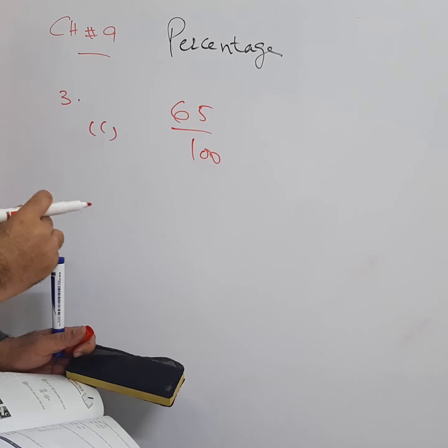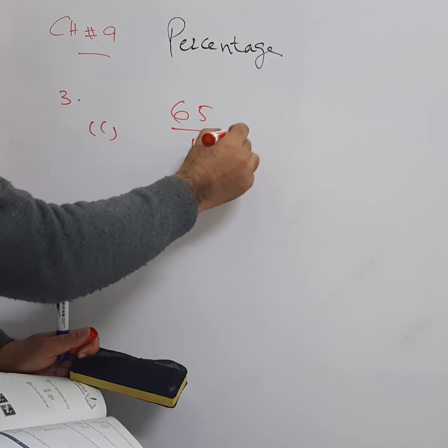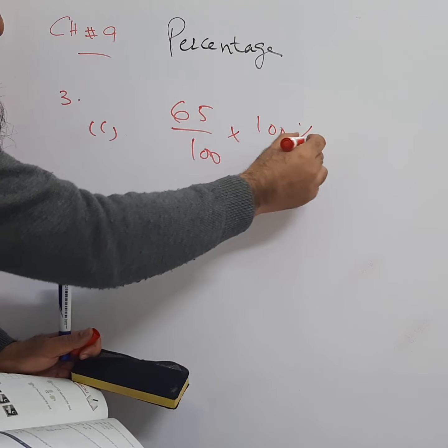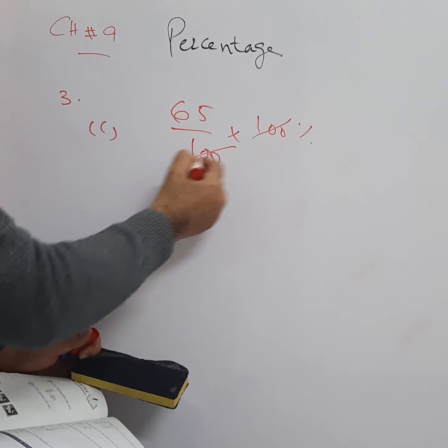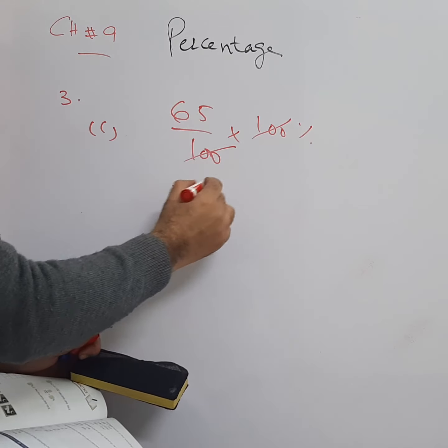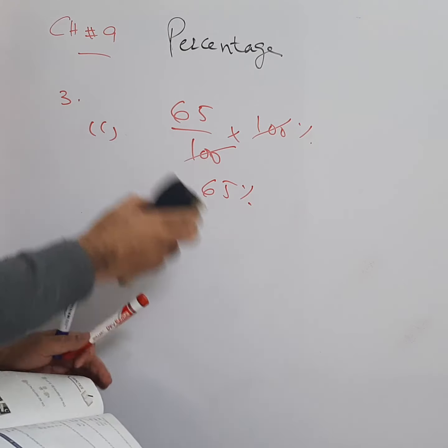To convert 65 over 100 into a percentage, multiply by 100 percent. The 100s cancel, giving 65 into 1 equals 65, so 65 percent is the answer for part c.